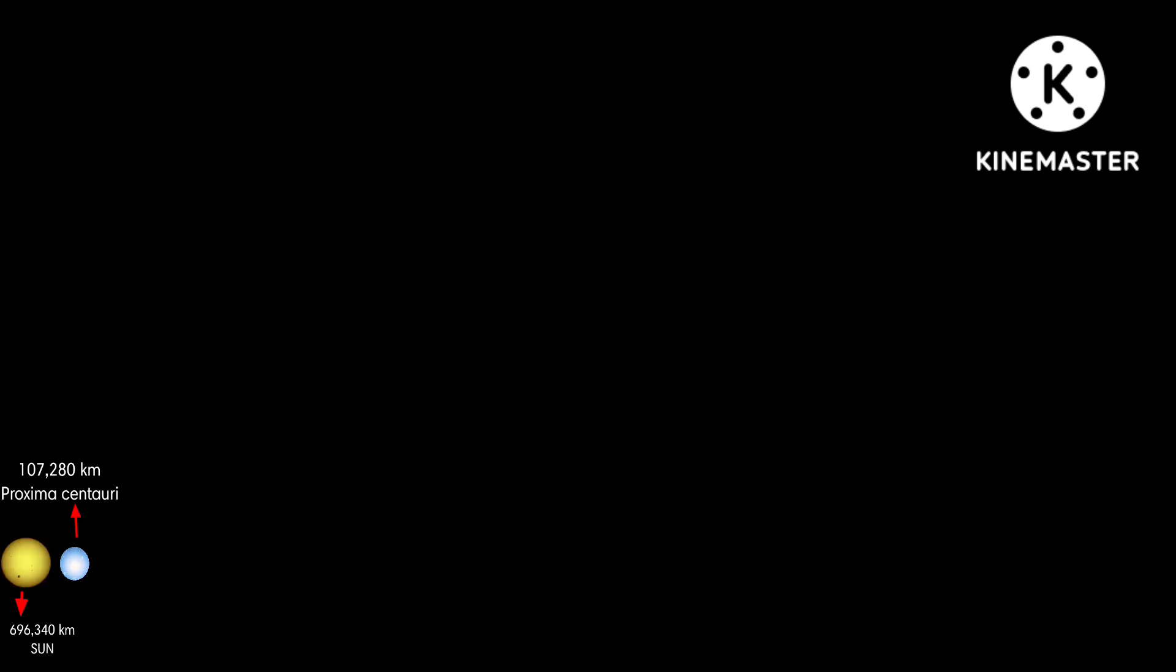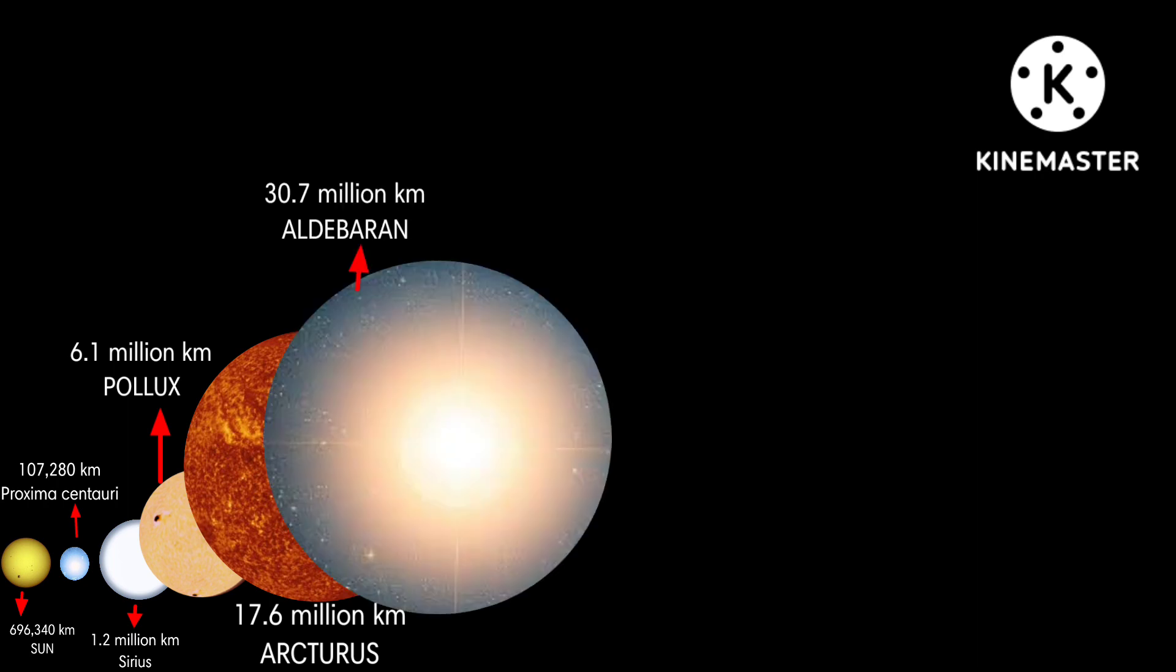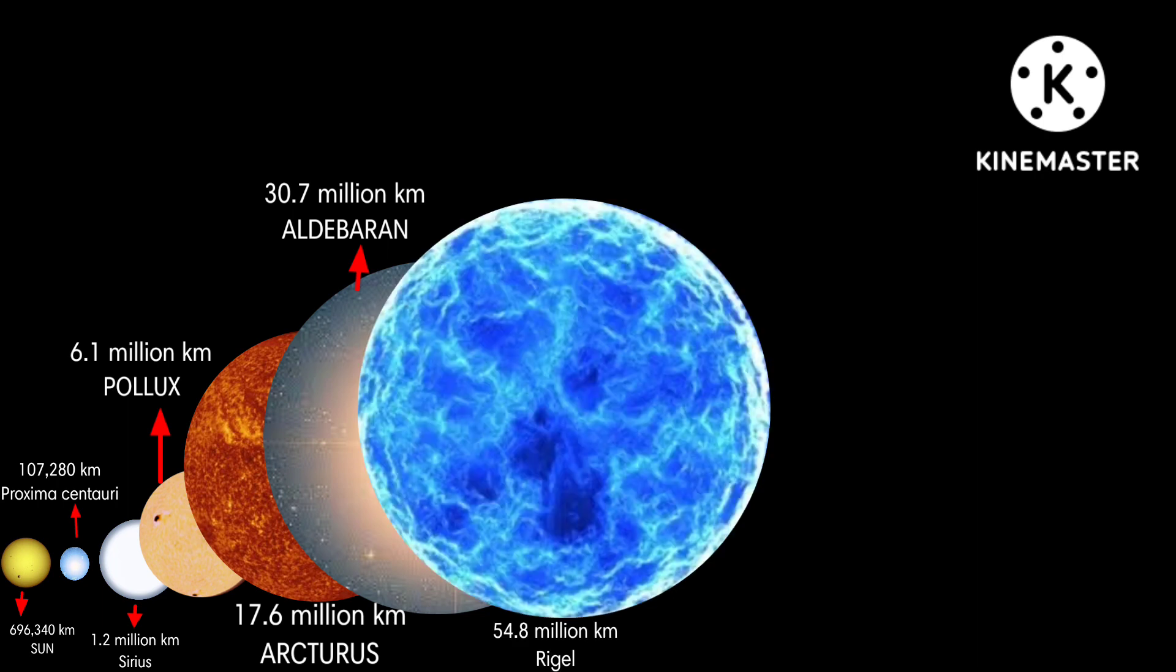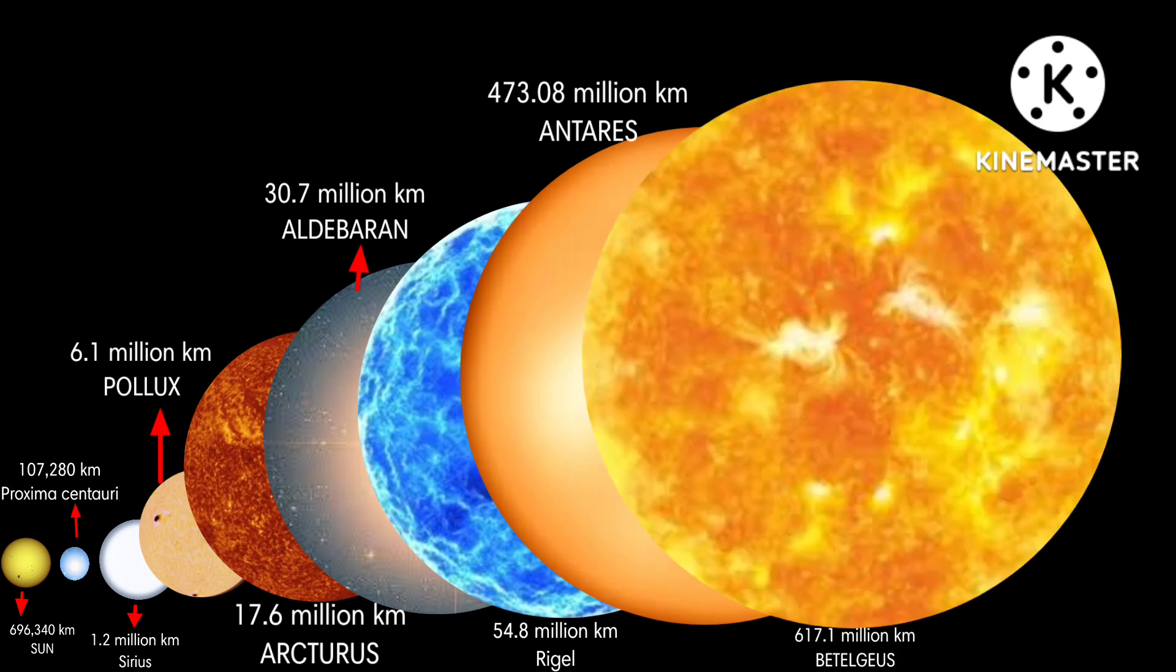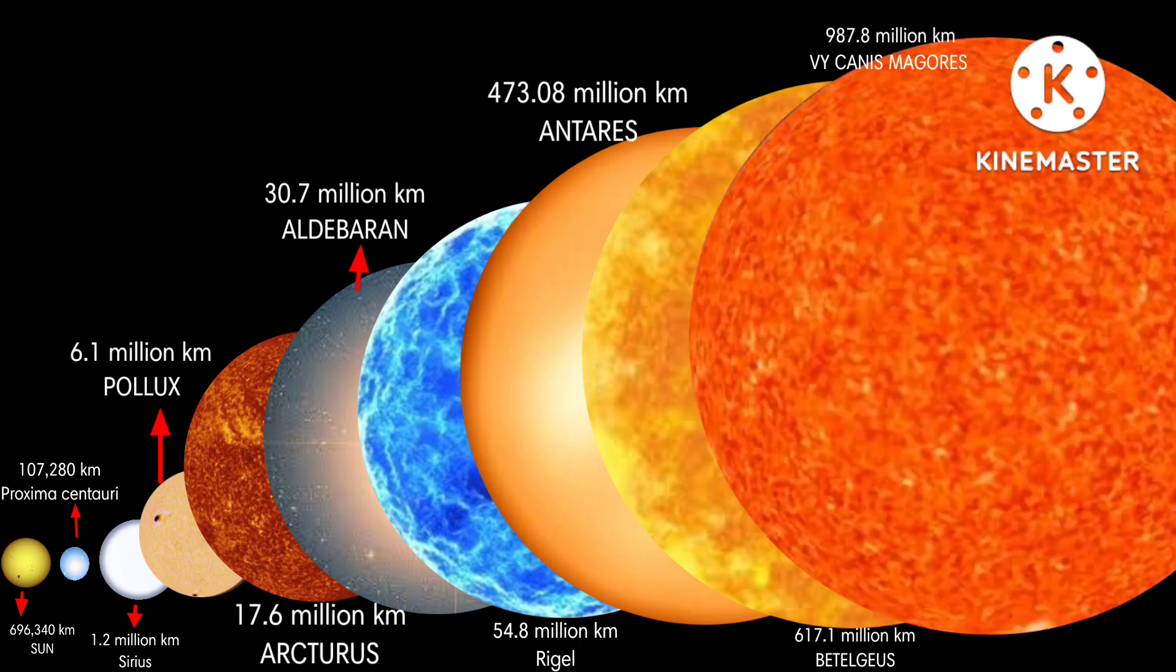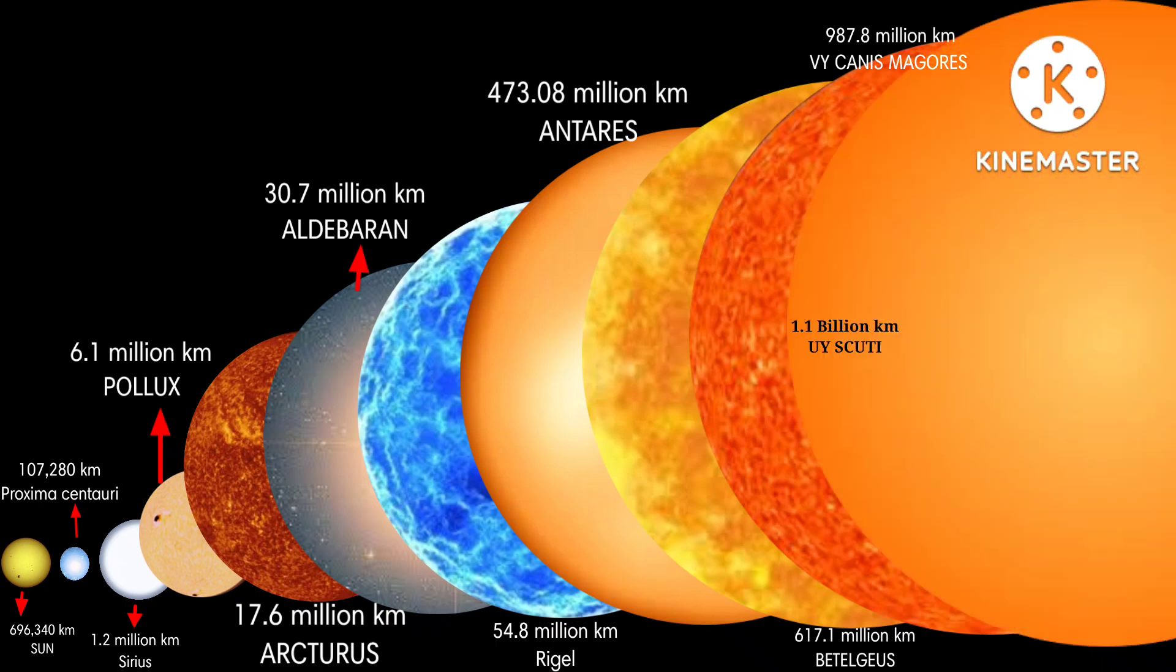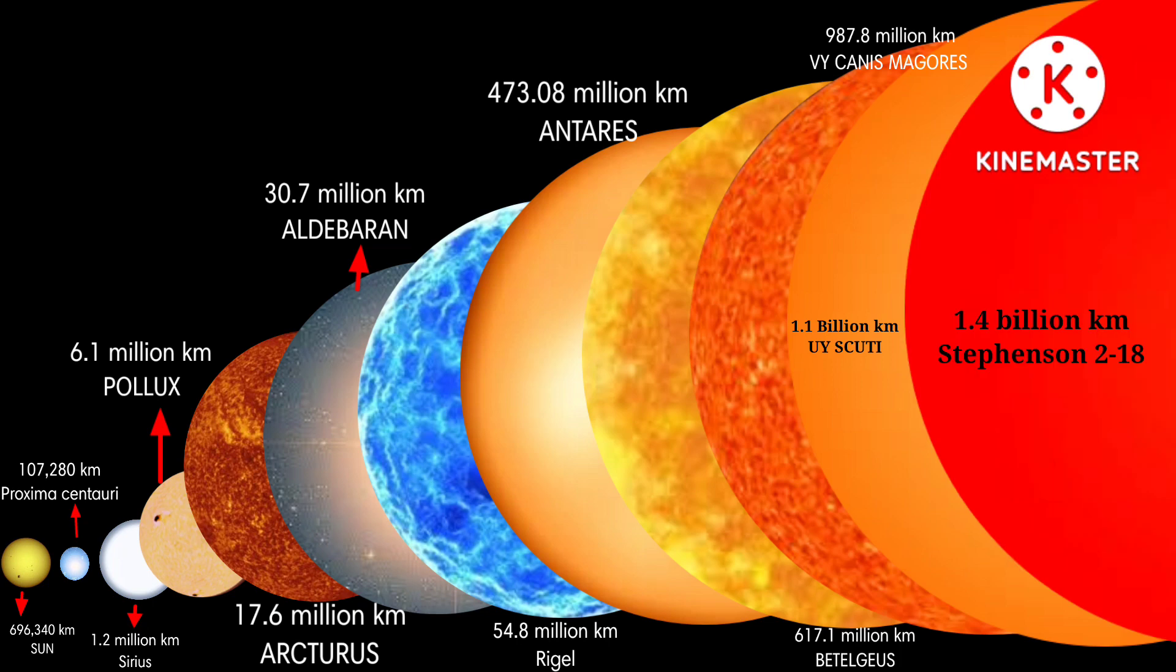Size comparison: Sun is 696,340 kilometers. Sirius is 1.2 million kilometers. Pollux is 6.1 million kilometers. Arcturus is 70.6 million kilometers. Aldebaran is 30.7 million kilometers. Rigel is 54.8 million kilometers. Antares is 473.8 million kilometers. Betelgeuse is 617.1 million kilometers. VY Canis Majoris is 987.8 million kilometers. UY Scuti is 1.1 billion kilometers. Stephenson 2-18 is 1.4 billion kilometers.